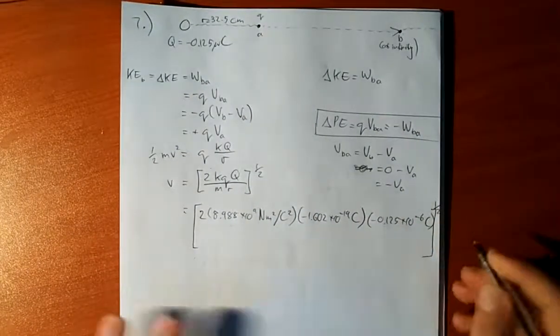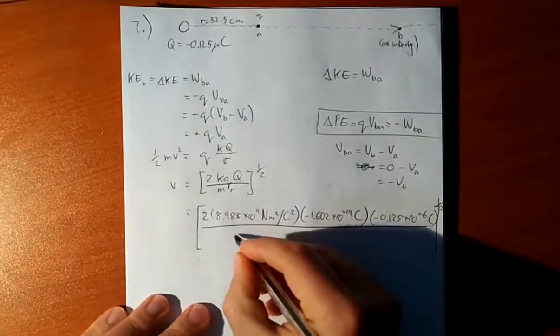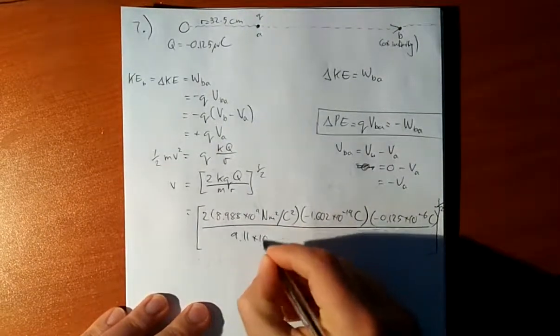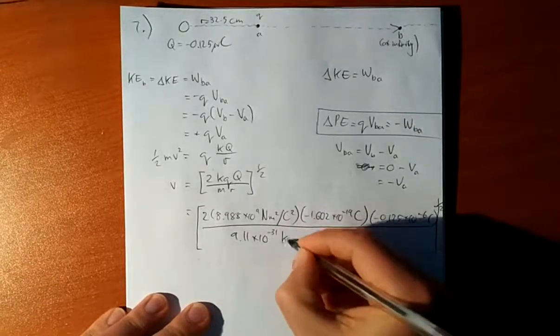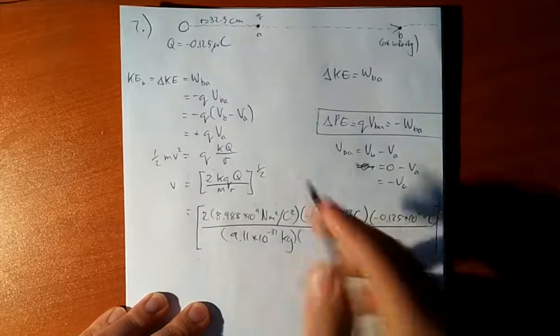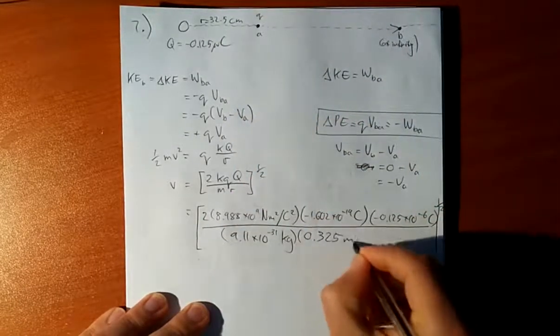And all of that over the mass of an electron. Based on this, you can go and look up. The front of the textbook should have it. It's 9.11 times 10 to the minus 31. Times R, which is, let's convert it to meters, 0.325 meters.